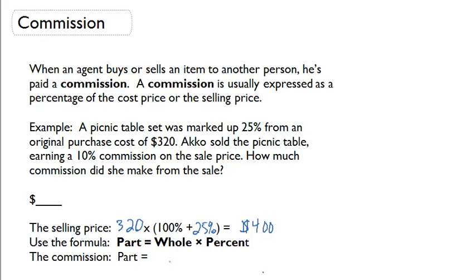Now, for the commission, we can use the formula: part equals whole times percent. So part is going to equal $400 times 10% for commission, which equals $40. So how much commission did she make from the sale? $40.